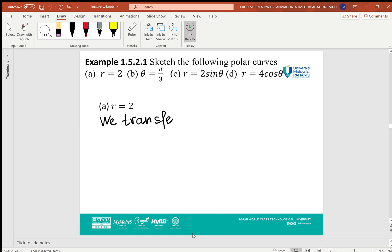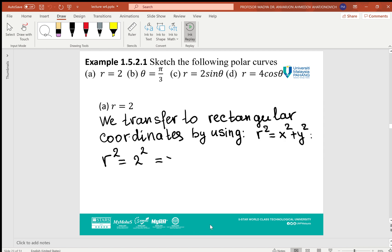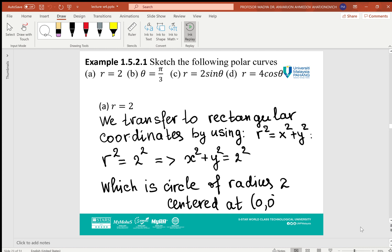As we've seen before, we can square both sides and use the formula r² = x² + y², which gives the equation of a circle with radius 2 and center at (0,0). We already saw this. Now we want to sketch the graph of r = 2 without using the rectangular formula.